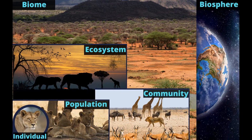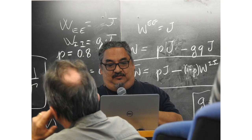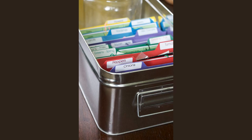In ecology, we often talk about different levels of organization, which help us understand how living organisms interact with each other and their environment. The video shows a diagram of the levels of organization, starting from the smallest unit of life, the cell, to the largest, the biosphere. The first level of organization is the individual organism, which is a single living entity that can carry out all the functions of life.